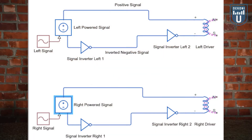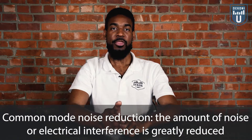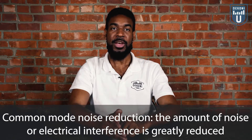Balanced cables use four wires across both audio channels. Each channel uses two signals with opposite polarities — a negative and a positive signal. For each stereo channel, the positive and negative wires pick up the same amount of noise, meaning there is no difference in voltage between the two channels. Each signal path shares the same amount of impedance, which is another word for electrical resistance. The purpose of having two signal paths for each channel is to achieve common mode noise reduction, where the amount of noise or electrical interference is greatly reduced to little or no sound at all.